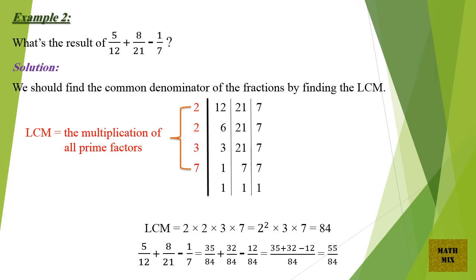So, 5/12 + 8/21 − 1/7 = 35/84 + 32/84 − 12/84 = (35 + 32 − 12)/84 = 55/84.